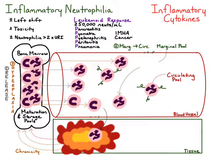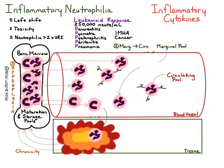In summary, inflammatory neutrophilia is caused by inflammatory cytokines leading to release of the maturation pool, shifting of marginal neutrophils into the circulating pool, and with chronicity, hyperplasia of neutrophils within the bone marrow. The best indicators of inflammation in a patient are the presence of a left shift, neutrophil toxicity, or a moderate to marked neutrophilia greater than two times the upper reference interval.